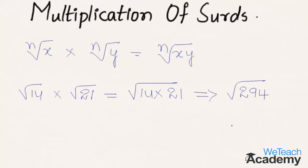Now let us multiply two more surds: root 13 into root 11. We can write this as under root 13 into 11, which equals under root 143.